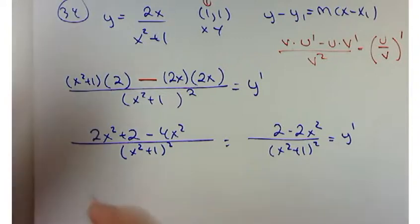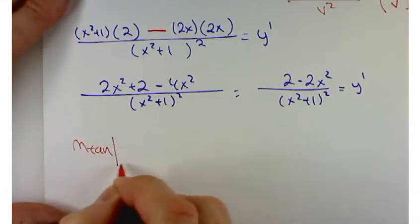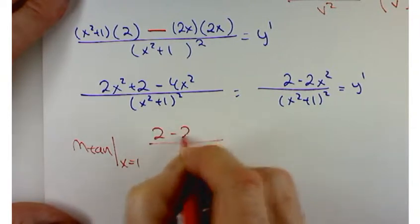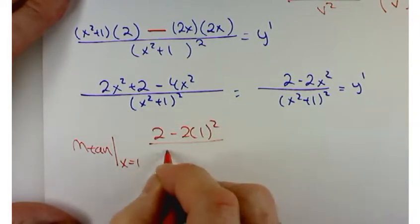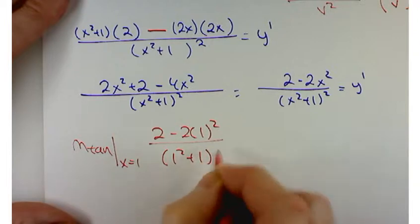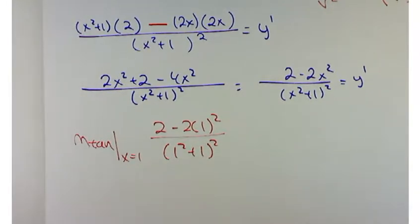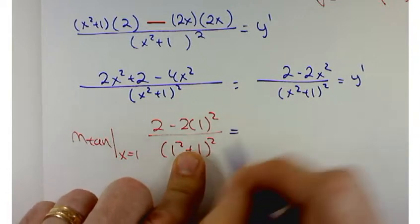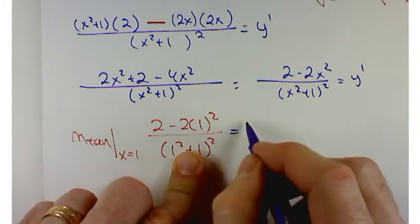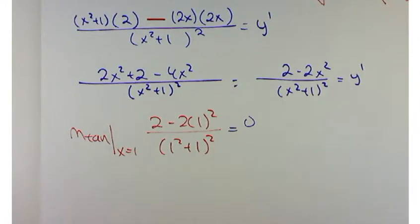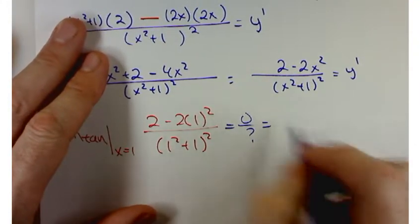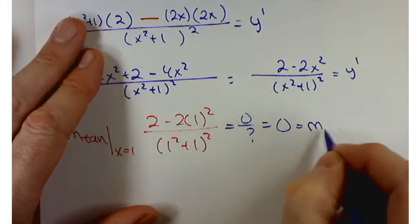So m tan will do this. At x equal 1, it's going to be 2 minus 2 times 1 squared over 1 squared plus 1 squared again. And guess what? I don't even need to evaluate the denominator because the numerator is 0. So 0 over whatever, it's not going to be 0, is 0. And that's the slope of the tangent line.